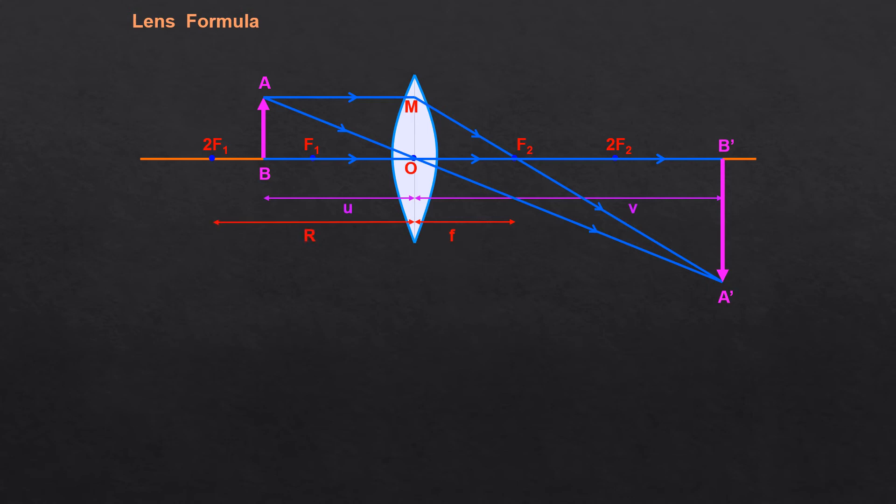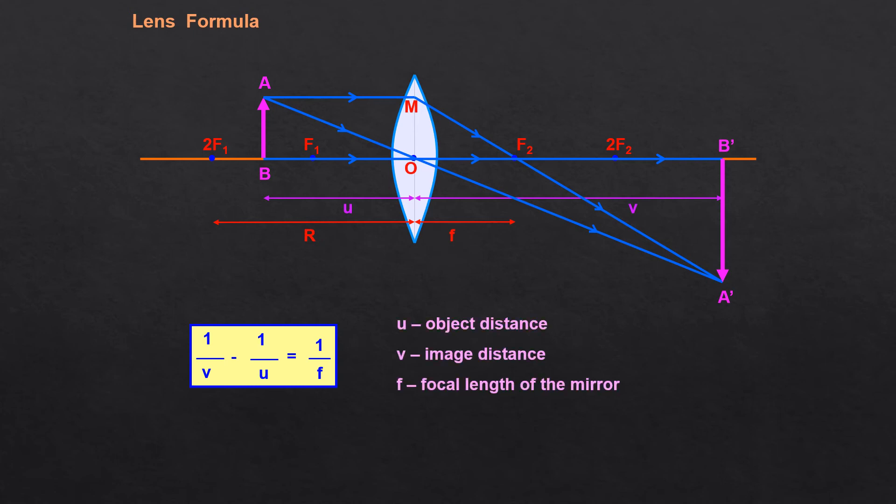Focal length is CF. R is 2F, or the center of curvature. So that is the radius of curvature R. These are the points you should remember. The lens formula is 1 by F is equal to 1 by V minus 1 by U. It is just the sign is opposite to that of the mirror. U is object distance, V is image distance, F is focal length of the lens.